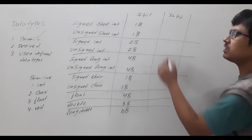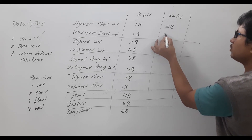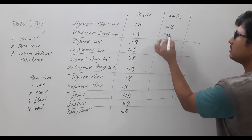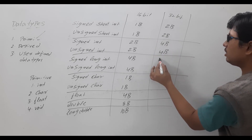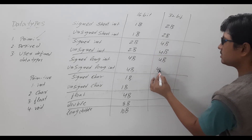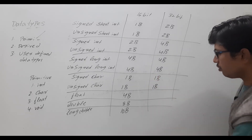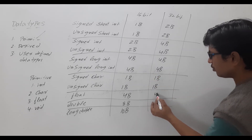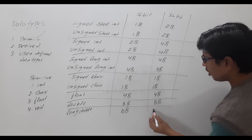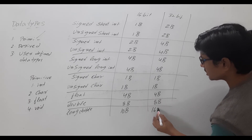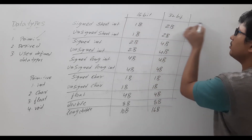For a 32-bit compiler: short int occupies 2 bytes, int occupies 4 bytes, long int occupies 4 bytes, and character is 1 byte. Float is 4 bytes, double is 8 bytes, and long double is 16 bytes. So this covers the memory allocation for both compiler types.